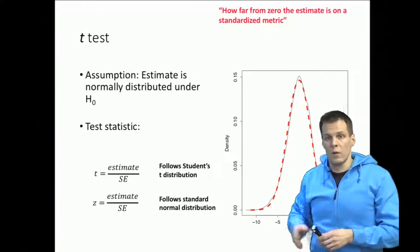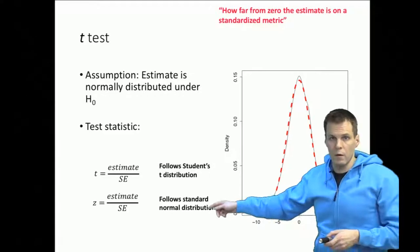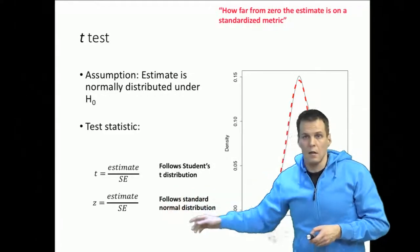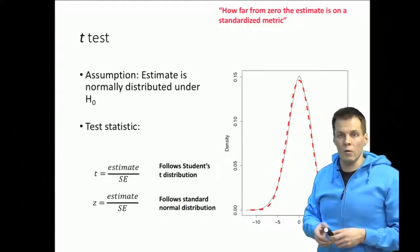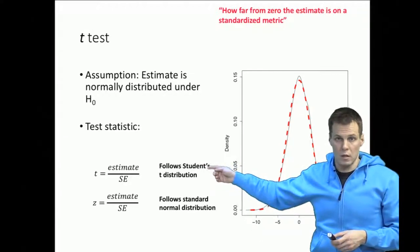So for that we rely on the assumption that our sample size is large enough and then we use the z-statistic. In regression analysis we know how the estimates are distributed even in small samples and therefore we can use the t-distribution.